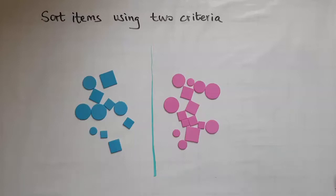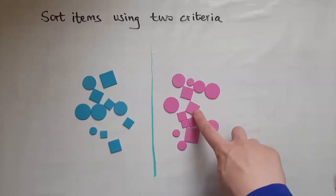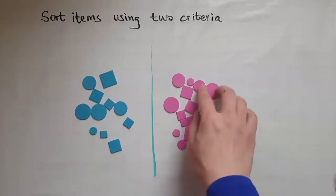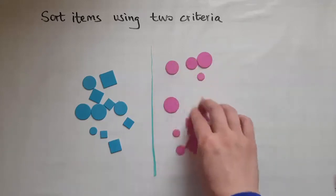Now I can also see that these shapes are not exactly the same. So I've got circles and squares, so I could sort them as well based on that.